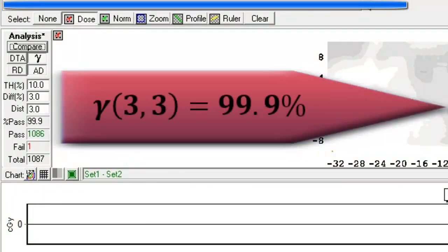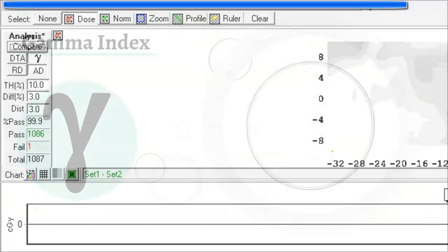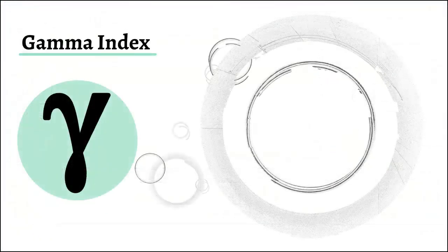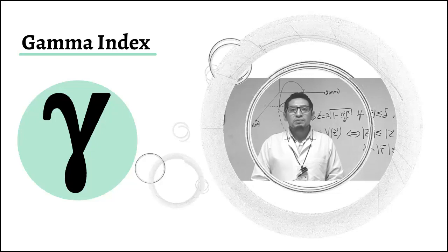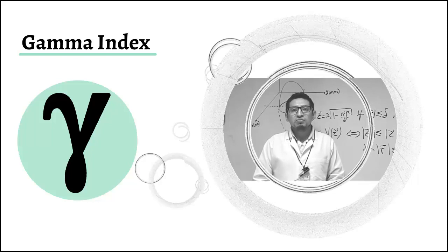The gamma index is a mathematical tool that helps compare two dose planes. The most important is to understand it from its most basic form to be able to apply it adequately in each of the radiotherapy centers.